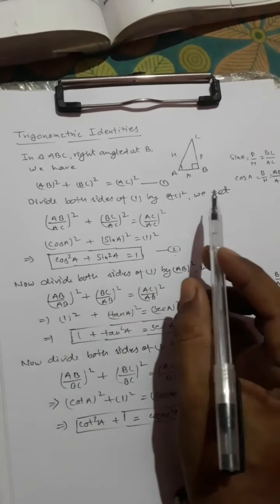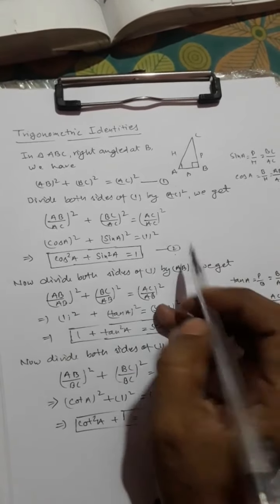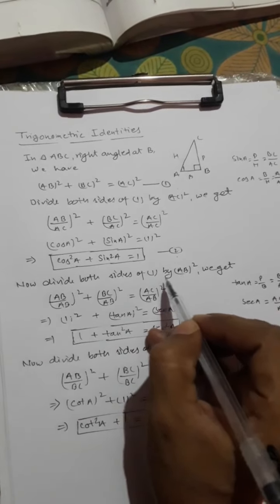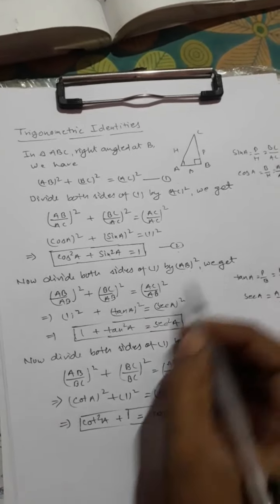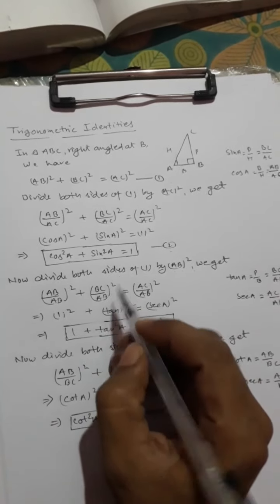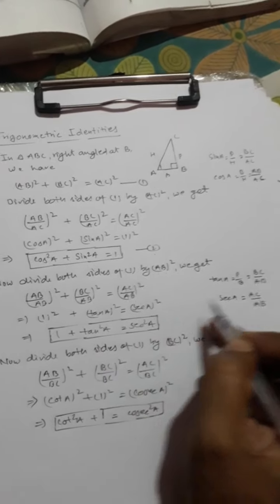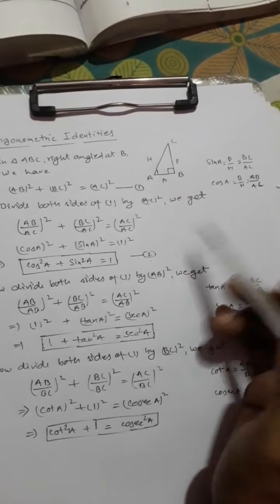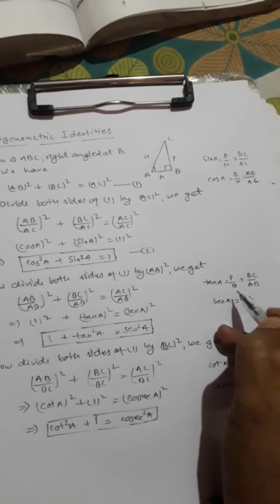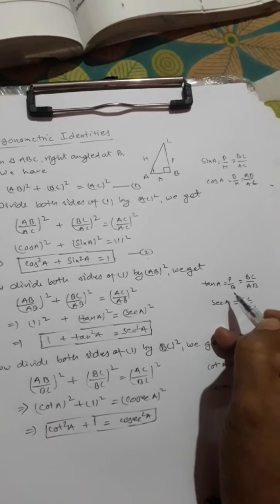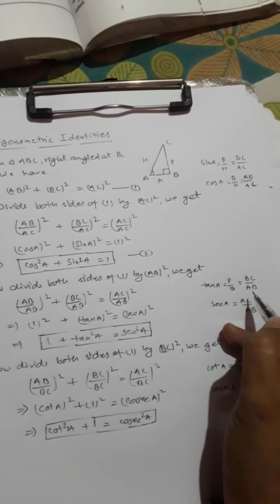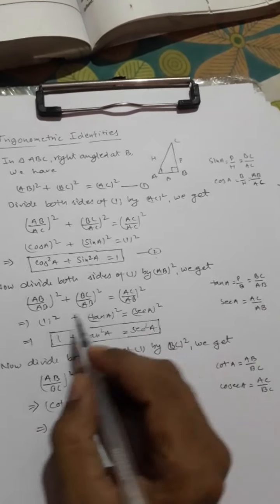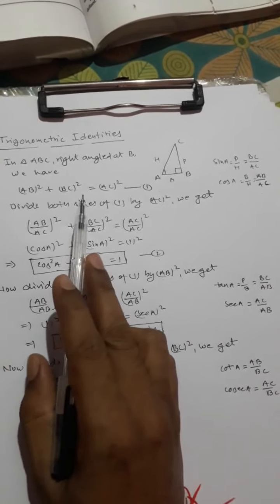For the second identity, we will divide both sides of equation one by AB². Our requirement here is tan A and sec A. For this triangle ABC, tan A = perpendicular upon base = BC upon AB, and sec A = hypotenuse upon base = AC upon AB.